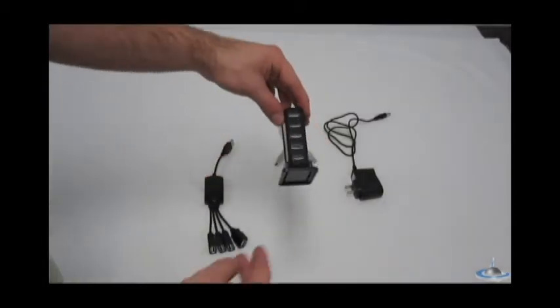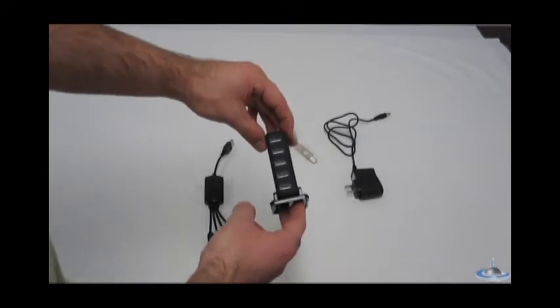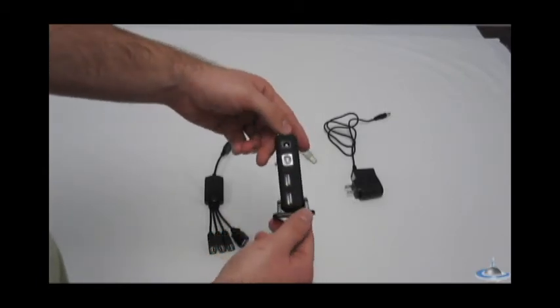And the second one we have is a 1-7 hub. There's five on the front as you can see, and then there's two on the back.